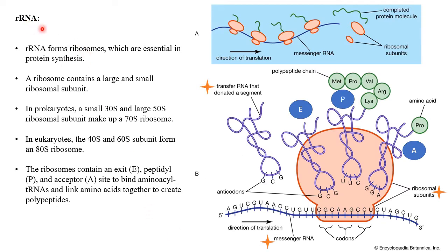Ribosomal RNA — rRNA — forms ribosomes, which are essential in protein synthesis. A ribosome contains a large and a small ribosomal subunit. In prokaryotes, the small subunit is 30S and the large subunit is 50S — where S stands for the Svedberg unit. Together they make up a 70S ribosome. Note that 30 plus 50 equals 80, but the combined ribosome is actually 70S — this is a tricky but important point to remember.